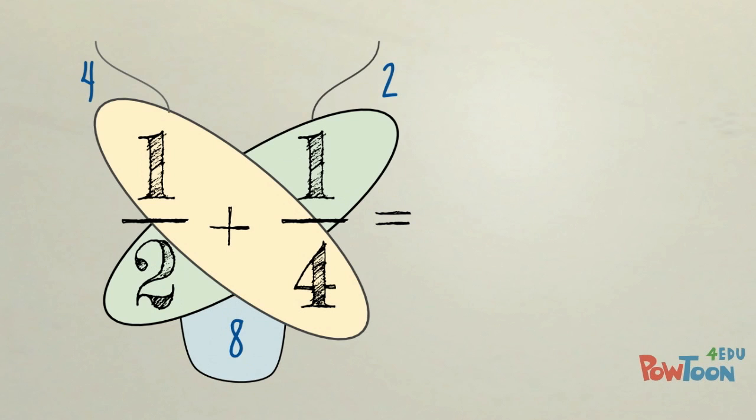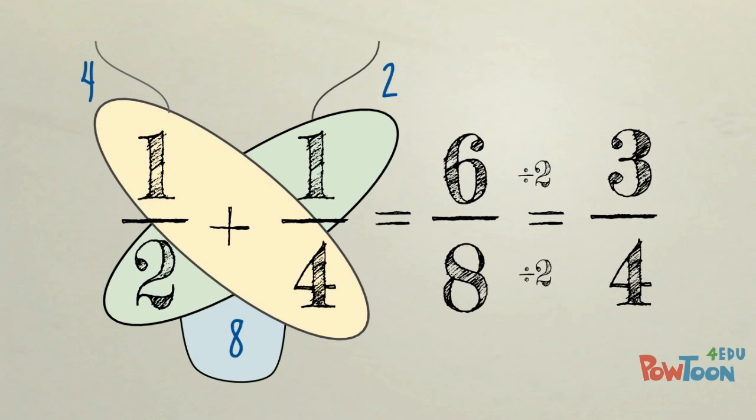Now we simply just add the top numbers and keep the denominator 8. 4 plus 2 is 6. Keep 8 as our denominator. But because 6 eighths, 6 and 8 share a common factor of 2, we must divide by 2 to simplify. 6 divided by 2 is 3. 8 divided by 2 is 4. So our final answer is 3 fourths.